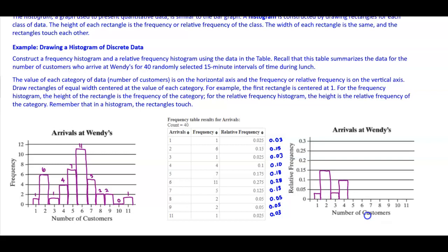For 5, we go to 0.18, all the way up. For 6, it's 0.28, all the way up. For 7, we have 0.13. For 8, we have 0.05. For 9, we also have 0.05. For 10, we have 0. And for 11, we have 0.03.